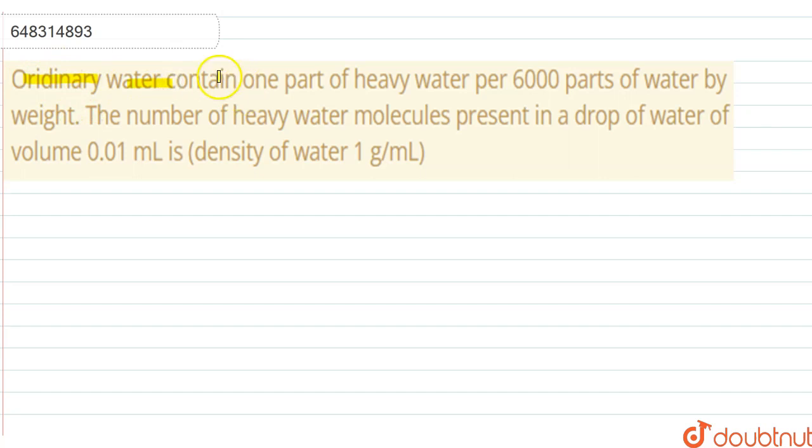water contain one part of heavy water per 6000 parts of water by weight. The number of heavy water molecules present in a drop of water of volume 0.01 milliliter. So it's given here the density of water is one gram per milliliter.